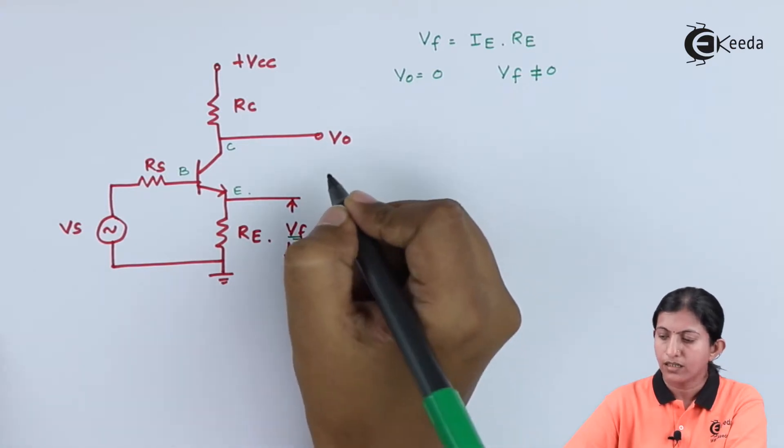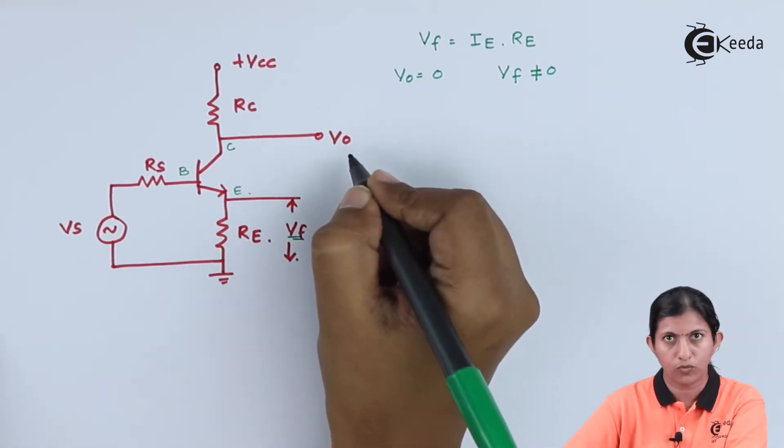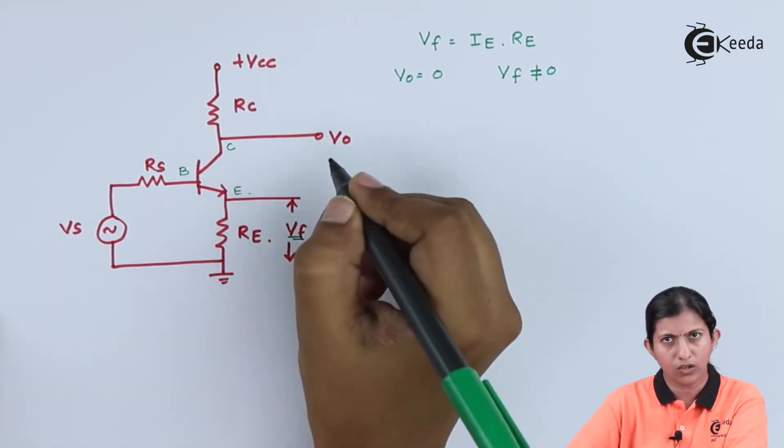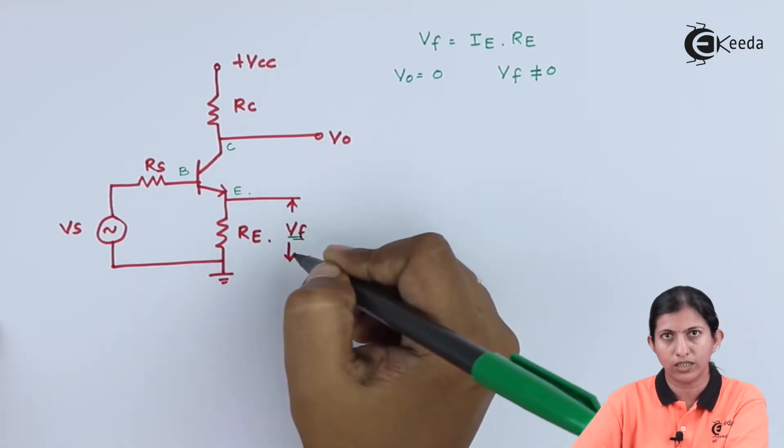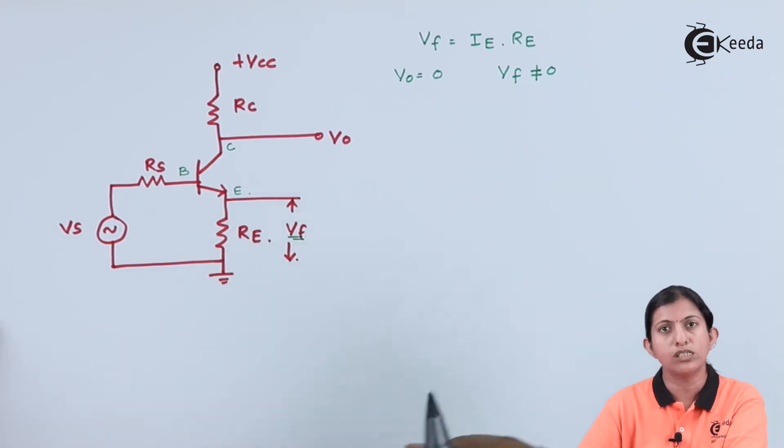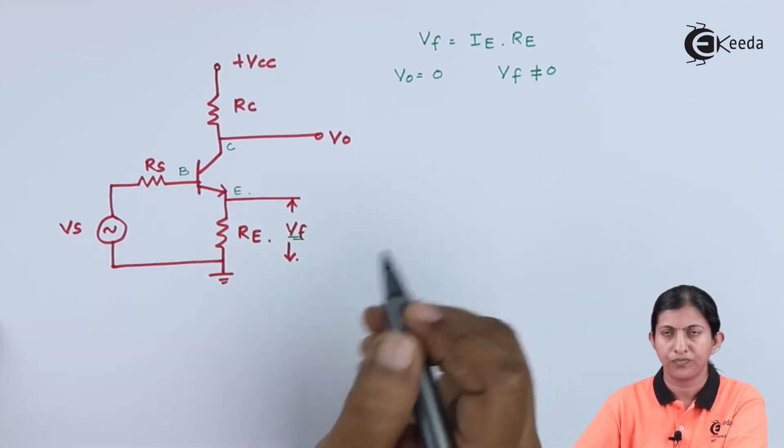That means the feedback voltage does not depend on the output voltage. If we consider the output voltage is zero, then it does not have any effect on the feedback voltage. So, even though Vo is zero, the feedback voltage is not zero, so this is not voltage sampling.